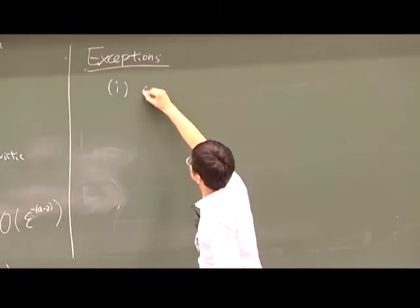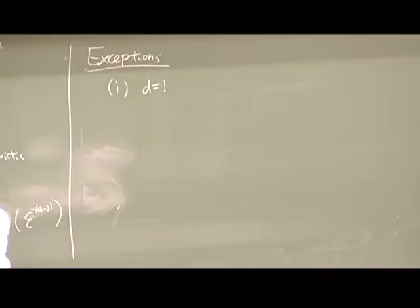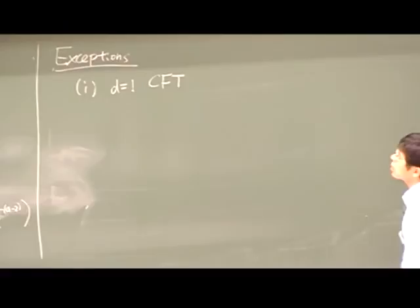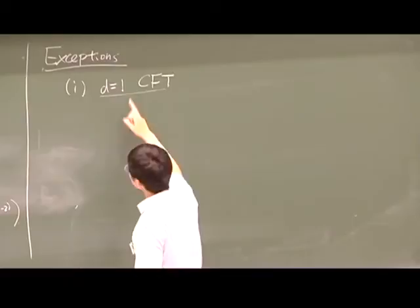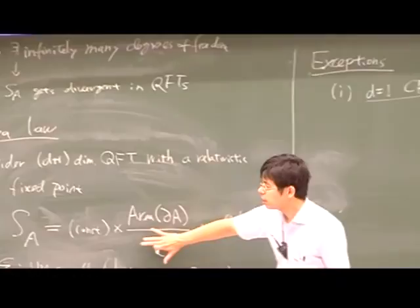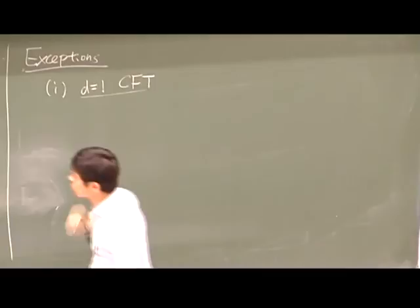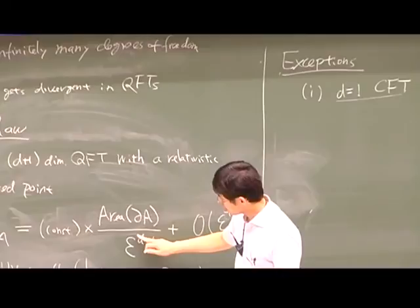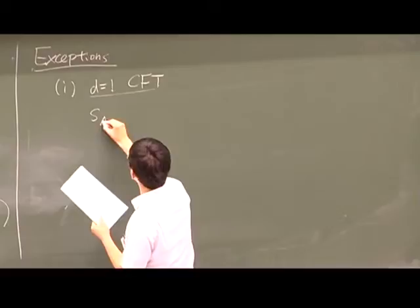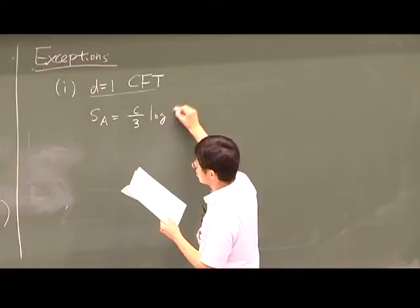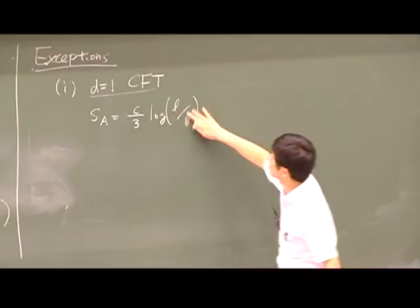The first exception — D=1, 2D CFT with scaling variance — is a very special case that violates the area law. For a finite-size subsystem of length L, the result is logarithmically divergent: S ~ (c/3) log(L/epsilon). The second exception is the Fermi surface, where we have a logarithmic contribution valid in any dimension. For finite Fermi energy, this becomes a finite correction rather than a UV divergence.